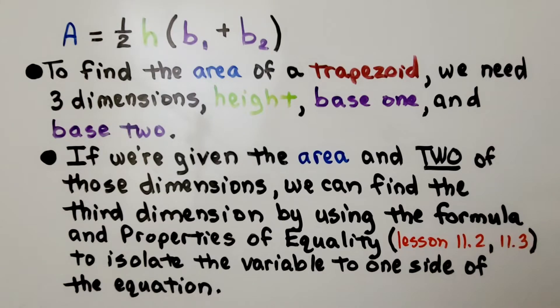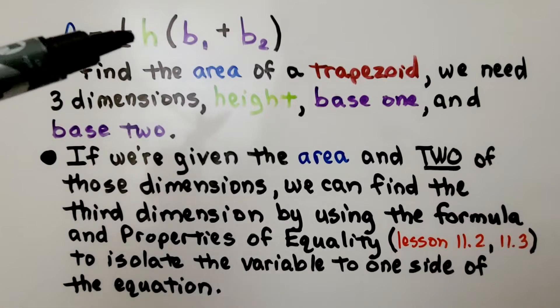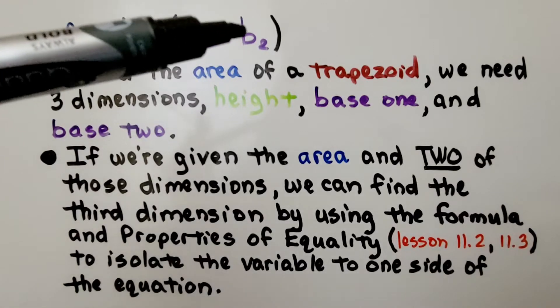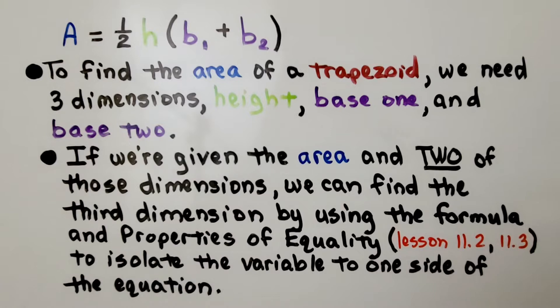To find the area of a trapezoid, we need three dimensions: height, base 1, and base 2. If we're given the area and two of those dimensions, we can find the third dimension by using the formula and properties of equality to isolate the variable to one side of the equation.